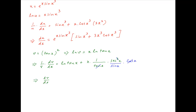Therefore, dv upon dx is equal to v, which is tan x raised to the power x, times in brackets ln of tan x plus x times sec x times cosec x.